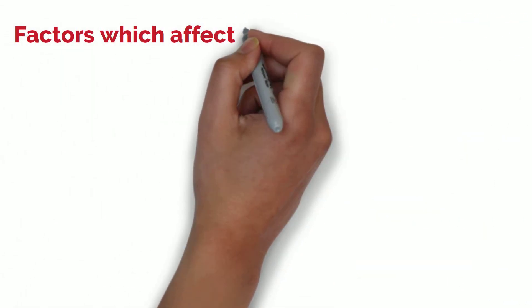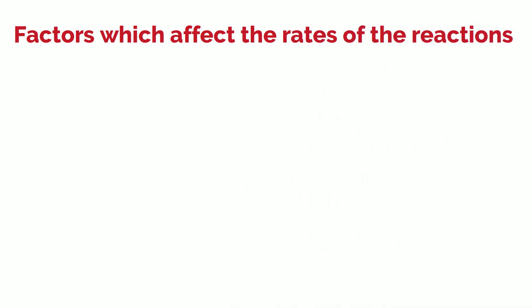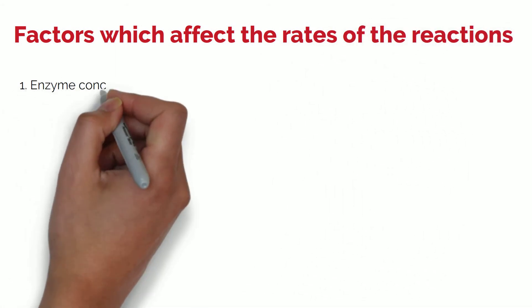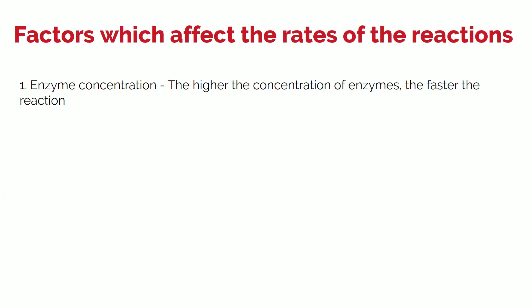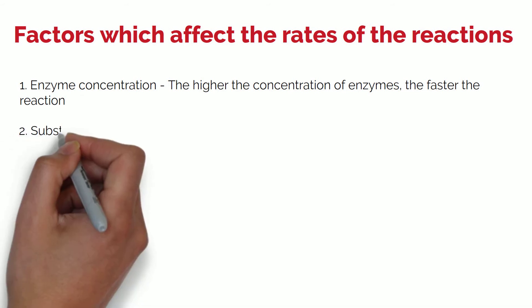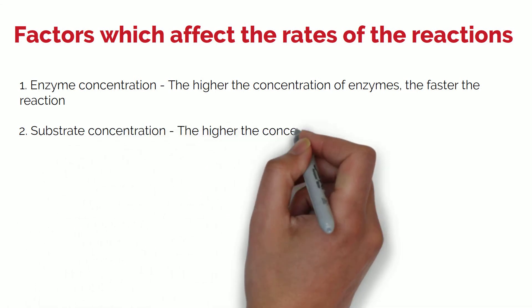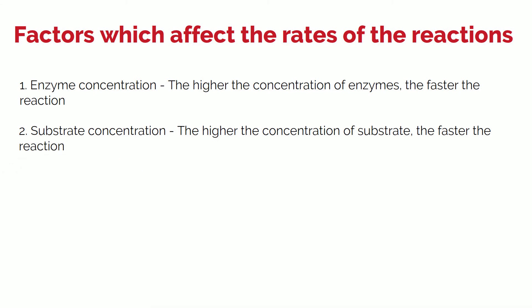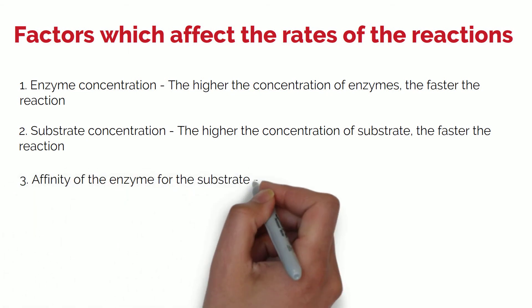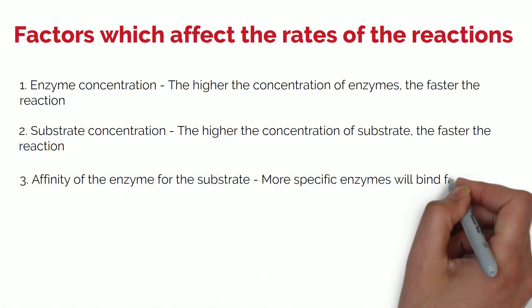There are several factors that could affect the rates of reactions catalyzed by enzymes. The first is enzyme concentration — the higher the concentration of enzymes, the faster the reaction occurs, so long as there is enough substrate to bind to the enzymes. The second is substrate concentration — the higher the concentration of substrate, the faster the reaction occurs, up until all enzyme binding sites are occupied, at which point the speed stagnates. The third is affinity of the enzyme for the substrate — more specific enzymes will bind faster and speed up the reaction.